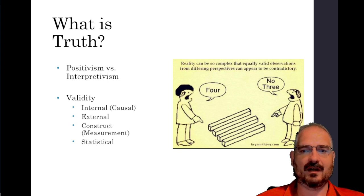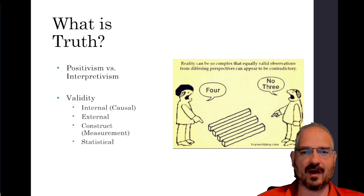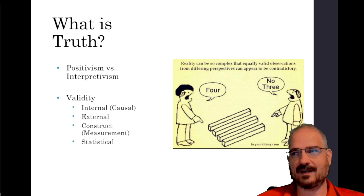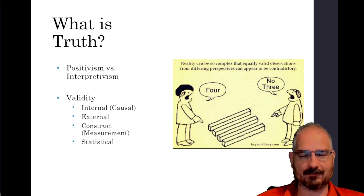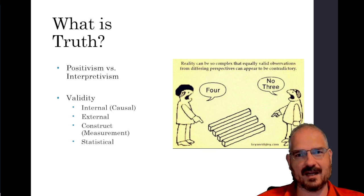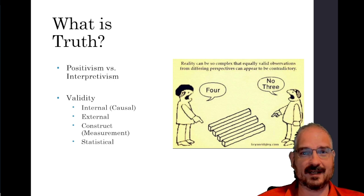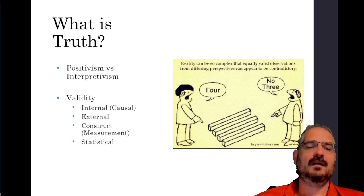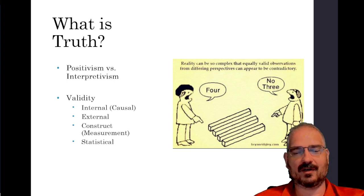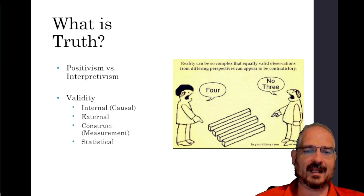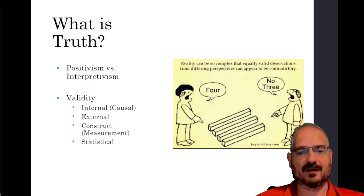For example, if I do a sample of voters in Tennessee and ask them about important issues, that might not translate well to California or Vermont. It might not translate to Tennessee voters in 1920 either. So how well can we apply our conclusions to other people, places, and times? Then there's construct validity, which we'll get much more into later — essentially, how well are you measuring what you think you're measuring?